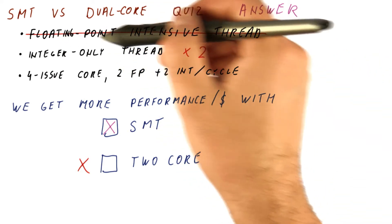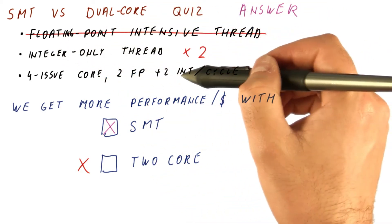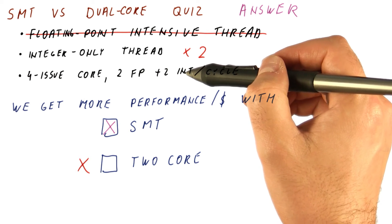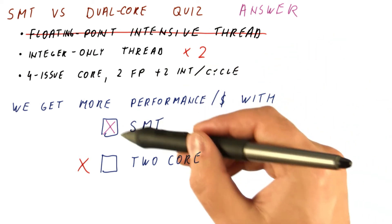The floating point intensive and integer only scenario with this type of split between issue slots is an extreme example that makes SMT look really good.